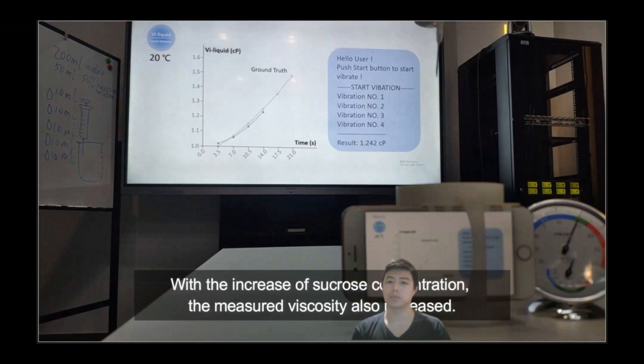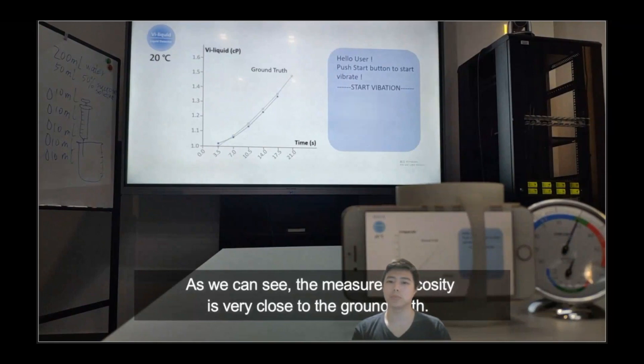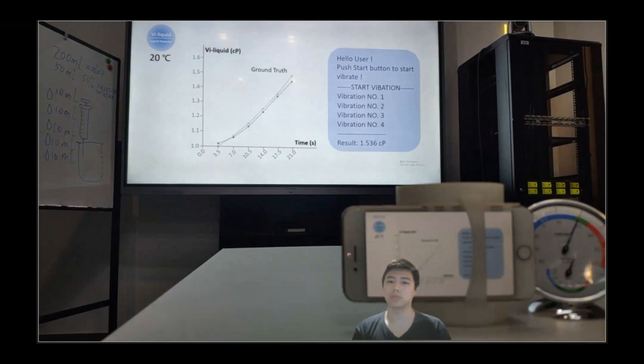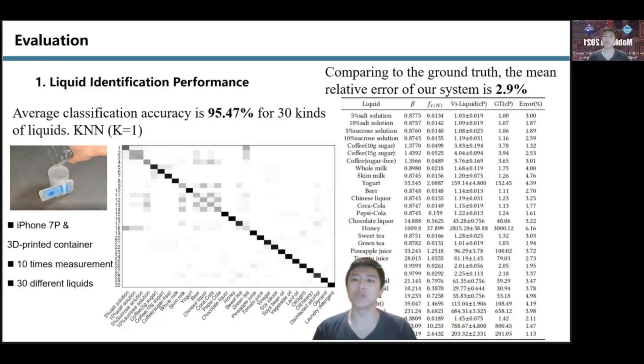We add 10 milliliters of sucrose solution each time to improve sucrose concentration in the ViLiquid container in real time. With the increase of sucrose concentration, the measured viscosity also increased. As we can see, the measured viscosity is very close to the ground truth. Now I will show you the wide range of experiments we did.